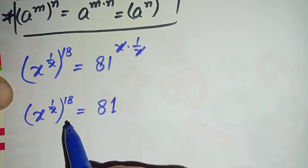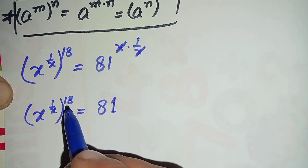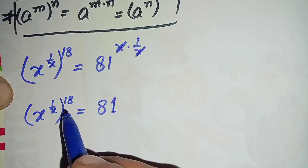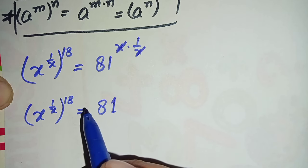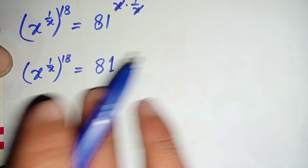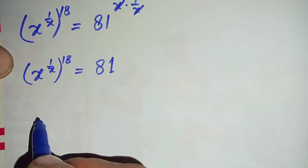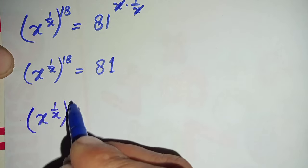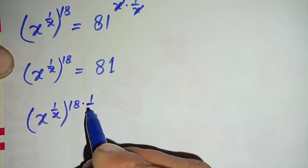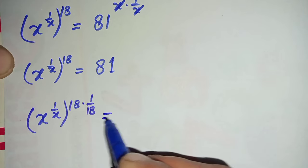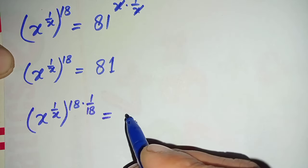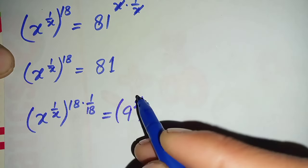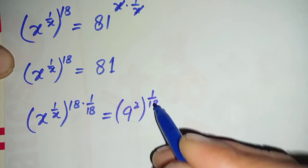Our next target is to eliminate this 18 from the power on the left hand side. To do so, we multiply 1 over 18 in the power on both sides. This gives x raised to power 1 over x, raised to power 18 times 1 over 18, equal to 81 — which we write as 9 raised to power 2 — raised to power 1 over 18.